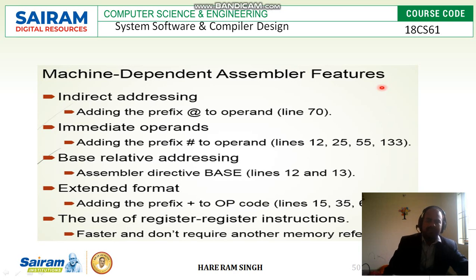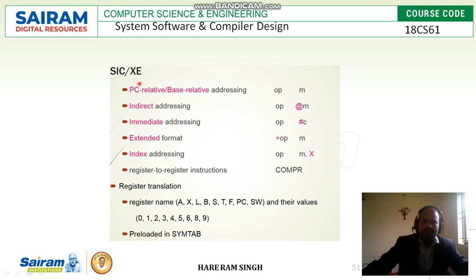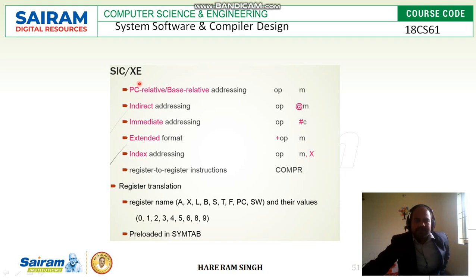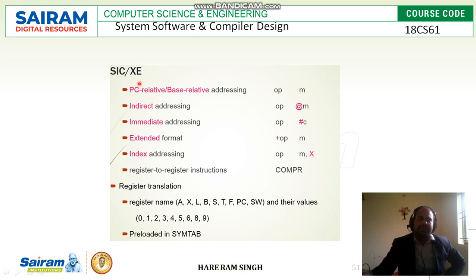One more slide here. In short: if the opcode is followed by an operand prefixed with '@', it is indirect addressing. If the opcode is followed by an operand prefixed with '#', it is immediate addressing. If the opcode is followed by operand comma X, then it is index addressing.